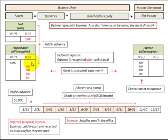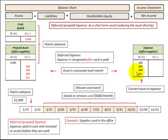So what we want to look at here is that this is a deferred expense. The expense is recognized after the cash is paid — we paid for these supplies up front. That's just a summary of a prepaid asset, or deferred expense as you might want to call it.